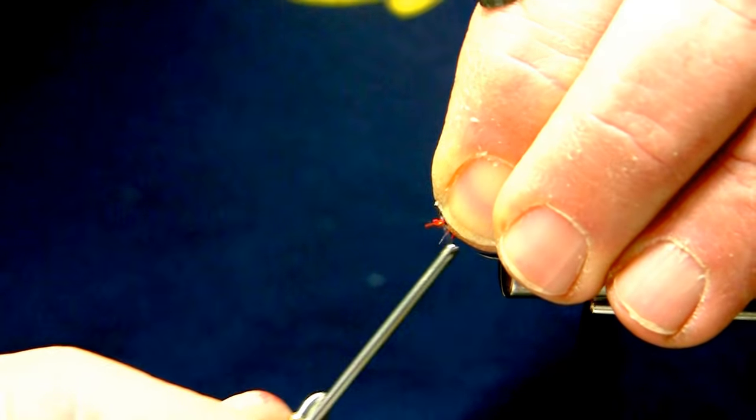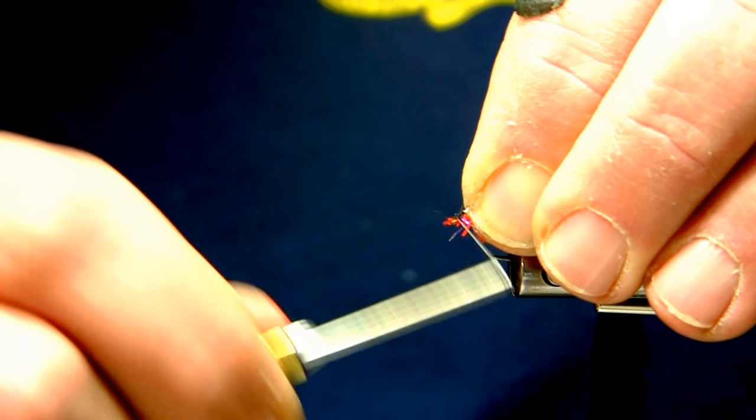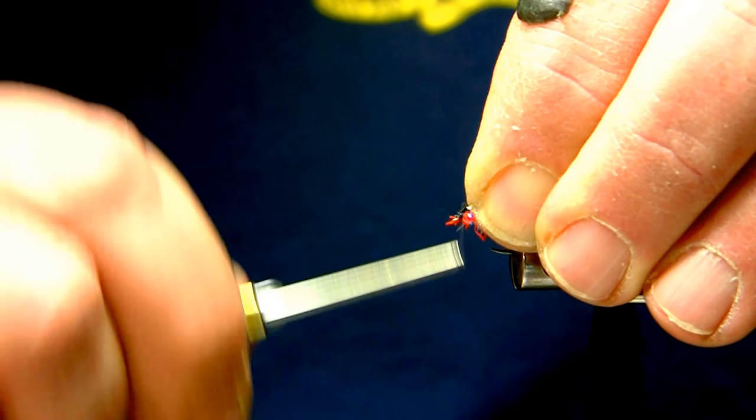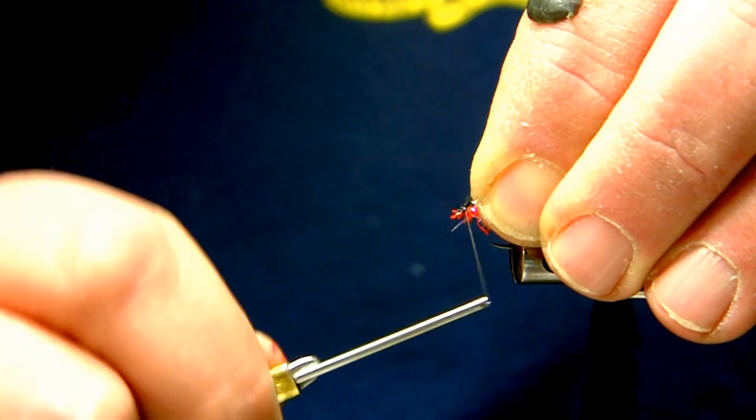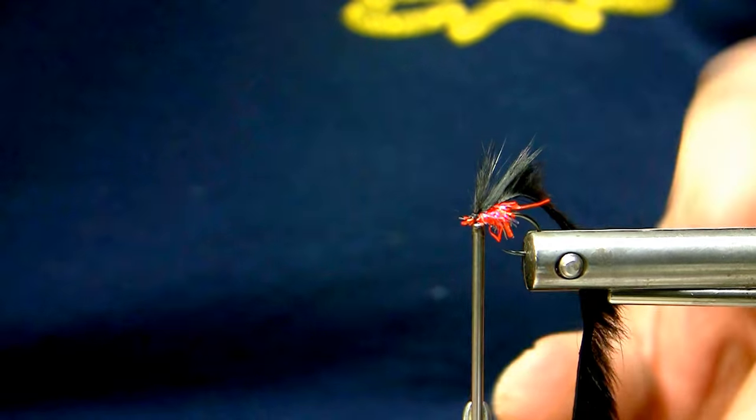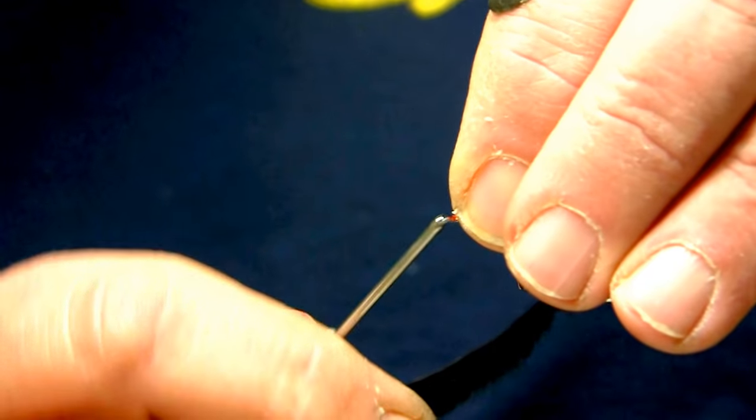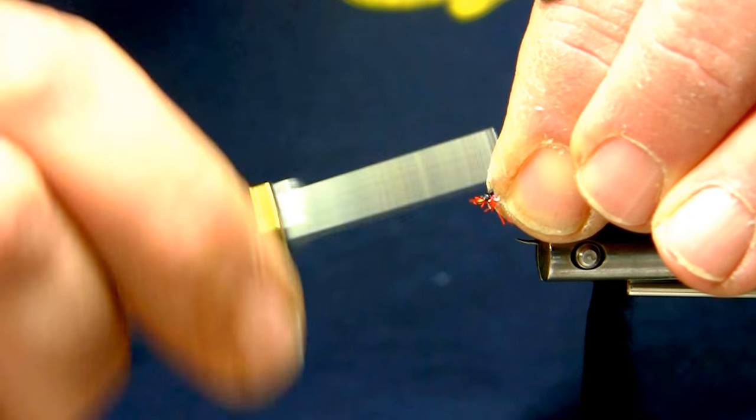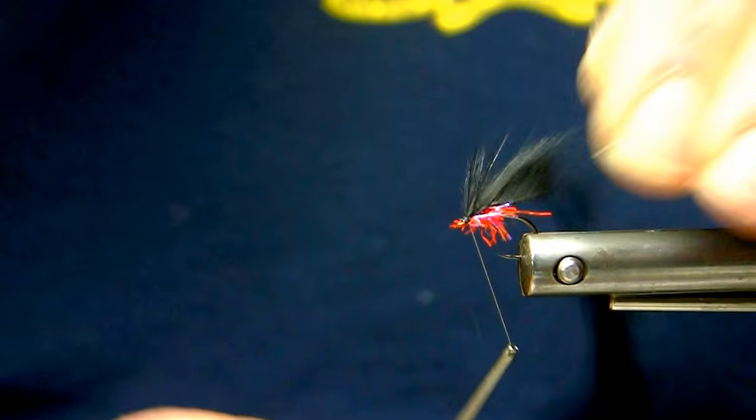So I'll just grab it in by just behind the hook eye and have a few touching turns moving further back. You have to be careful with this nano silk with the squirrel zonker strip because if you pull too tight it certainly will cut it.